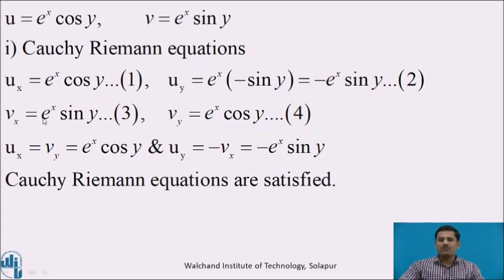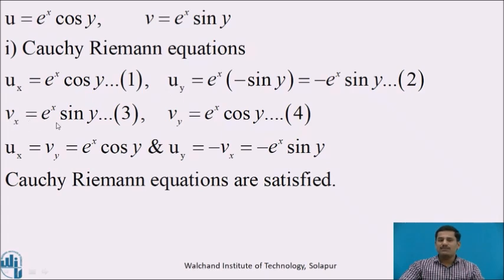Similarly, the partial derivative of v with respect to x, vx = e^x sin y, and the partial derivative of v with respect to y gives vy = e^x cos y. We can see that ux and vy have the same expression e^x cos y, so ux = vy. Also, uy and vx differ only in sign, so uy = −vx = −e^x sin y. From these two equalities, the given function satisfies the Cauchy-Riemann equations.